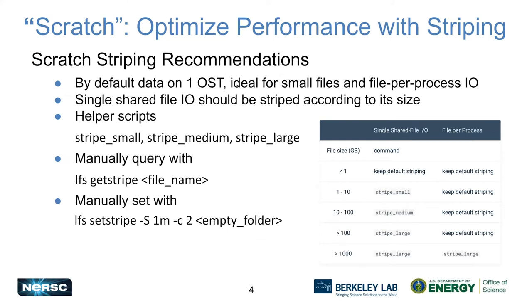We see that a lot of files are quite small, so by default things are stored on one OST, which makes sense for small files. However, if you're using larger files, or MPI shared file access, you want to stripe across multiple servers. One way to do that is with the helper scripts we provide with optimum options. If you're between 10 and 100 gigabytes, you can use the stripe medium helper script. If you're feeling more expert, you can set things using the LFS getstripe command.